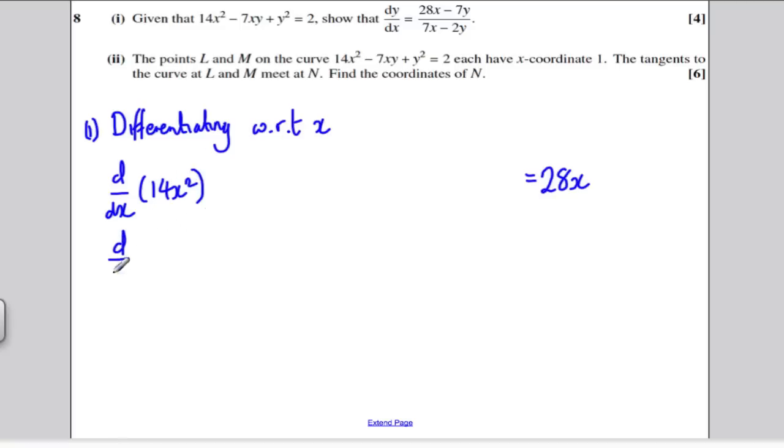Then I'm going to do the differential of 7xy. I'm going to treat this as a product where u is 7x and v is y. So using the product rule, if I differentiate uv, it's uv' plus vu'.